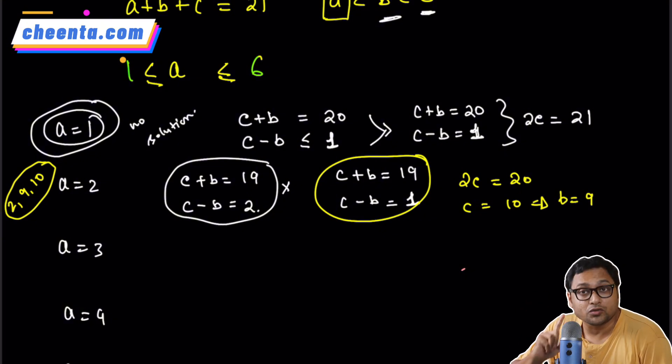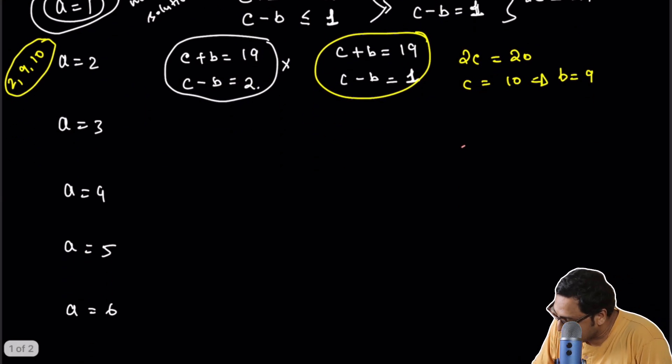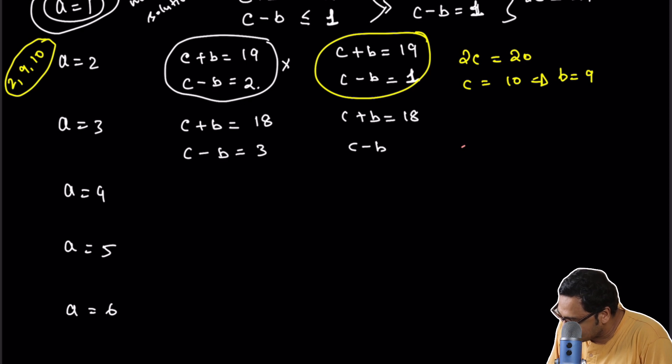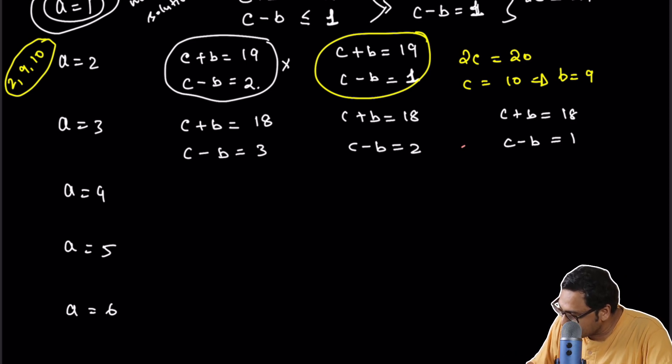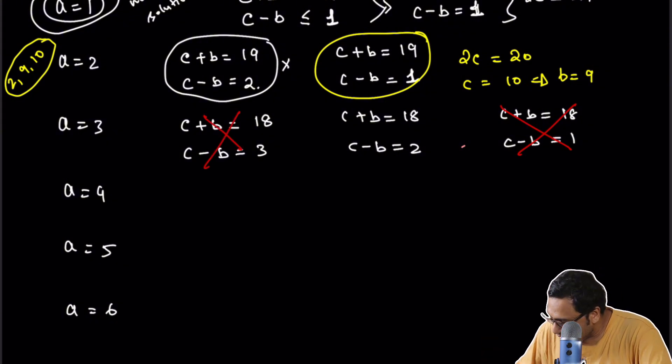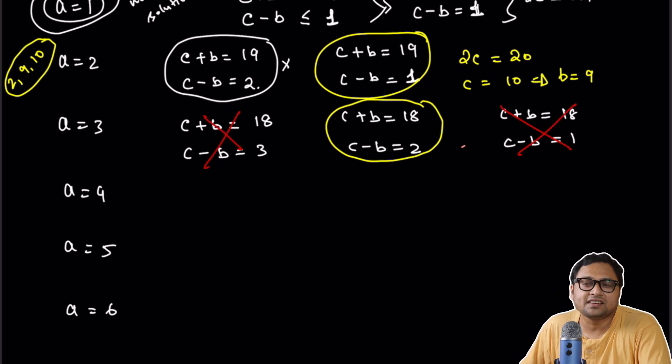Now we can do the same thing with A equal to 3. So for A equal to 3, we will have C plus B is equal to 18, C minus B, we have three cases. Now we can actually make our job shorter. If I just add the two equations, I will see these two cases will not work because C is becoming a decimal. So only one solution from here. We are just interested in the number of solutions, not the solutions themselves.